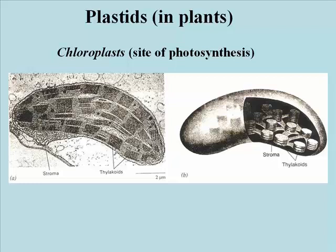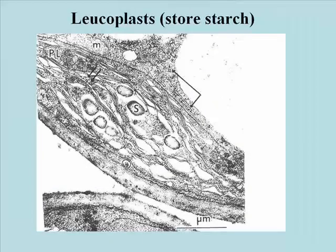The chloroplast is the site of photosynthesis in green plants and algae. At the end of a day, plant cell chloroplasts will be filled with starch, which is formed when the sugar made by photosynthesis is converted into the storage form — the starch polysaccharides.